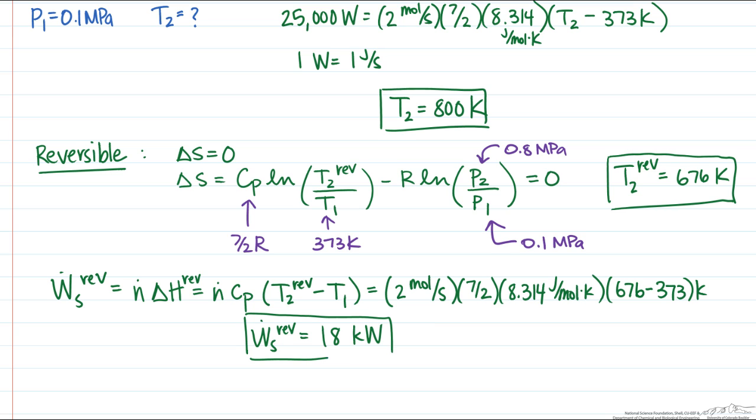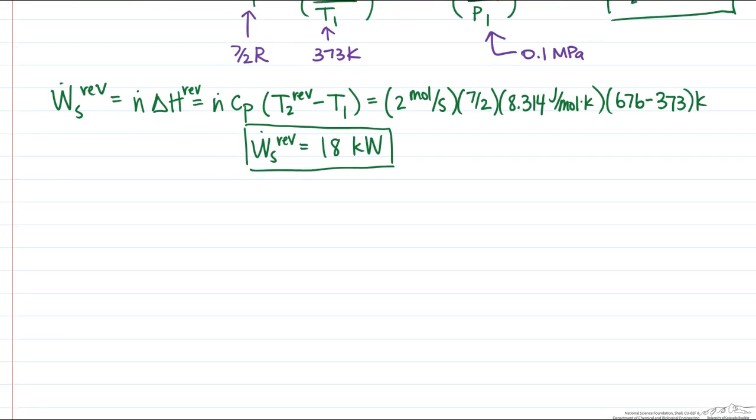And so in the actual compressor, there are some inefficiencies that are causing some of the work that you're supplying to be converted to heat, to heat up the gas to 800 Kelvin rather than just 676 Kelvin.